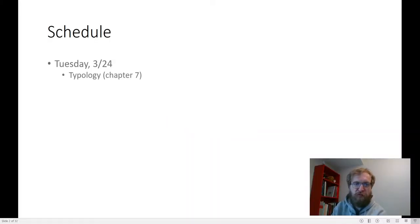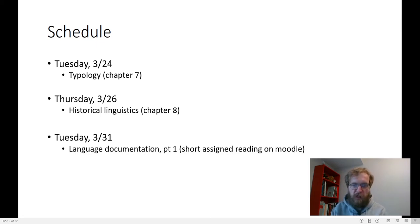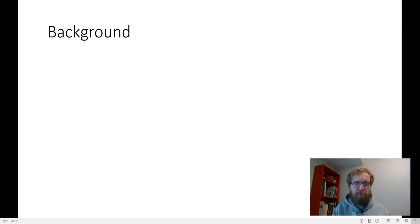Before we dive into our discussion of typology, chapter 7, different ways of categorizing languages, let's talk about the upcoming schedule. On Thursday I want to talk about historical linguistics, and that's really closely related to this concept of sociolinguistics that we've been talking about last week, to the concept of typology that we're talking about today. Next week I want to start getting into language documentation. There's no appropriate reading in the book about this, so I'll put a very short assigned reading on the Moodle that you can browse through.